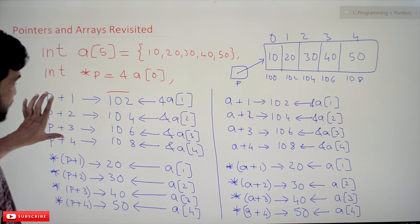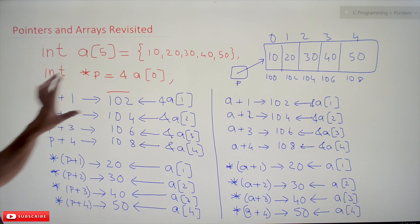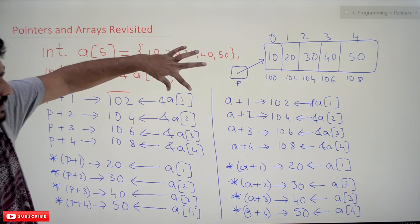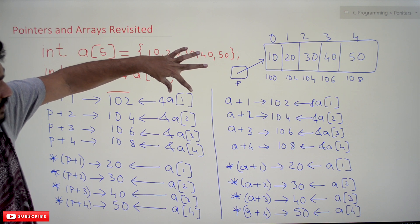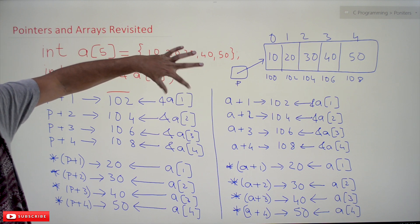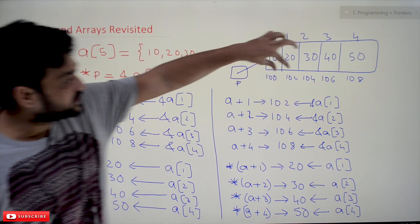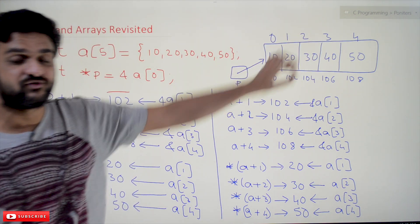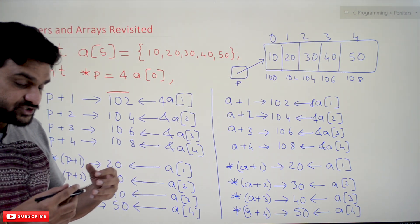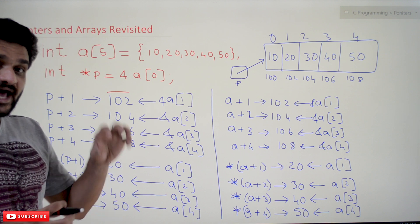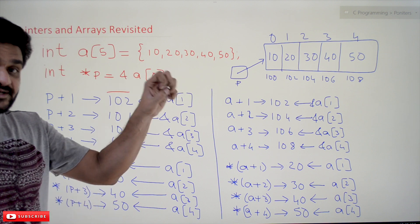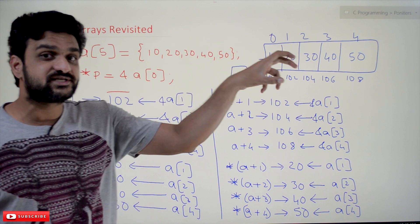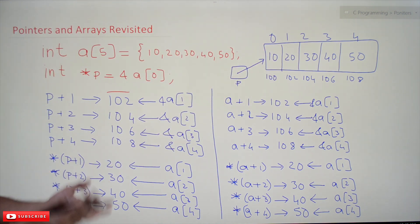The same output can also be obtained using the name of the array. Ampersand a[1] gives us the address of a[1], and ampersand a[2] gives us address 104. These are different ways to access the addresses of array elements.